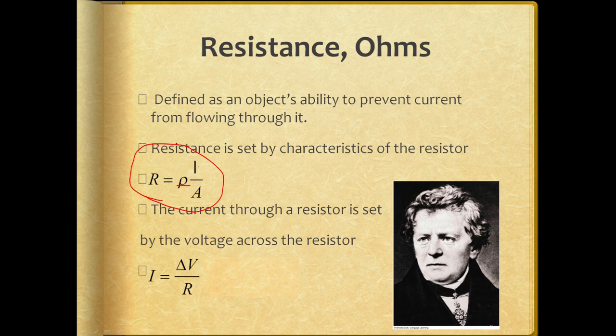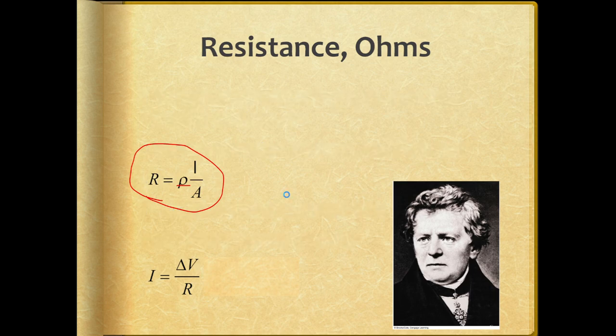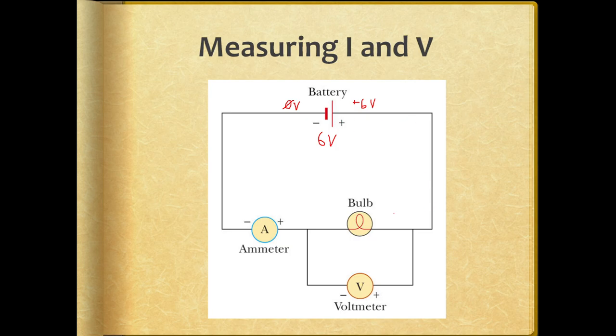Everything has a resistance to it. If it's a very small amount of resistance, that's called a conductor. If it has a very large amount of resistance, that is an insulator. This matters for circuits in a few places: we use insulators to coat the wires so that we don't shock ourselves and so that current doesn't go places we don't want it to. And an object's resistance is a large contributing factor to how much energy it takes up out of electrical current.